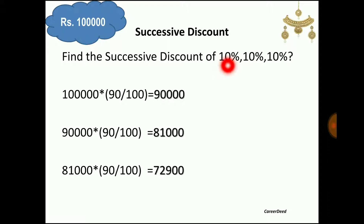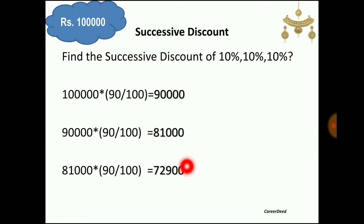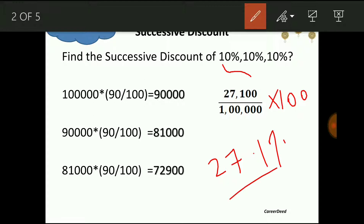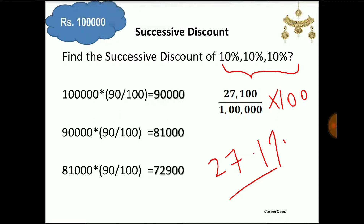When you look at the numbers normally, it looks like 30% discount. But the actual discount is not 30%. The initial amount is 1 lakh rupees and you are paying only 72,900, so the total discount given to you is 27,100. This 27,100 is 27.1% of 1 lakh rupees. So the actual discount given to you is 27.1%, not 30%.